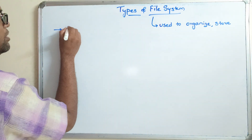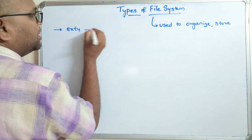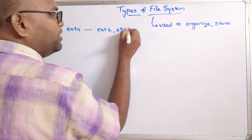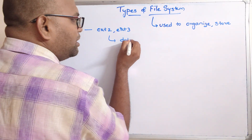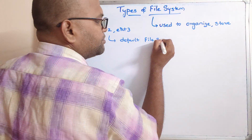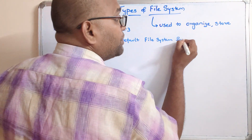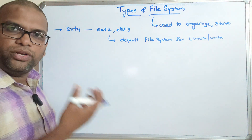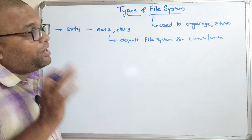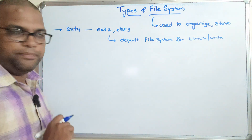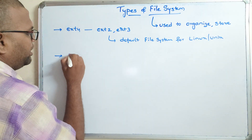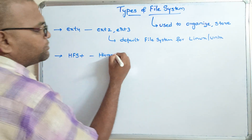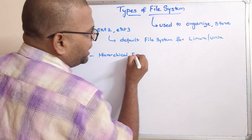The next file system is EXT4. There are different versions — EXT2 and EXT3 as well. This is the default file system for the Linux or Unix operating system. Linux is an open source operating system, and its default file systems are EXT2, EXT3, and EXT4. Also mentioned here is HFS Plus, which stands for Hierarchical File System Plus.